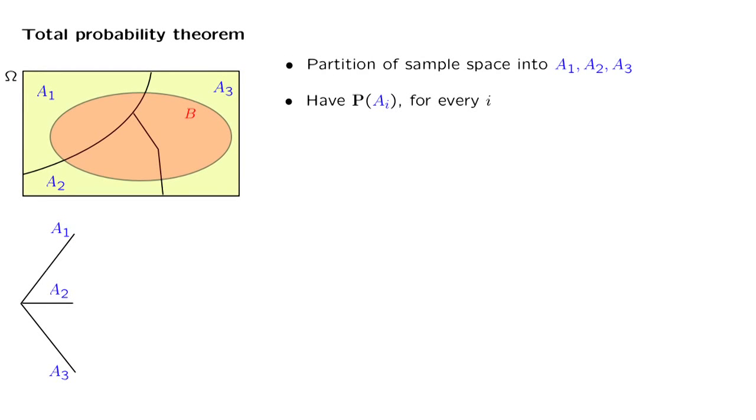Let us now revisit the second calculation that we carried out in the context of our earlier example. In that example, we calculated the total probability of an event that can occur under different scenarios, and it involves the powerful idea of divide and conquer, where we break up complex situations into simpler pieces.